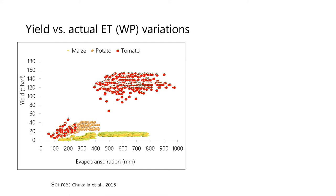The inputs to biophysical water productivity — yield and evapotranspiration — vary across environments and crop types among others. In the figure, you see yield on the y-axis and evapotranspiration on the x-axis for different crops: tomato, potato and maize, grown in arid, semi-arid, subhumid and humid environments covering from the Middle East to North Europe.